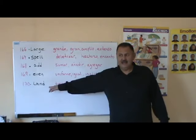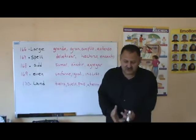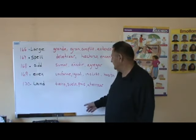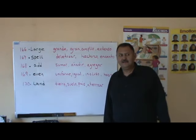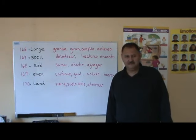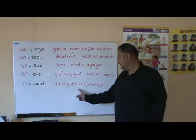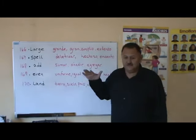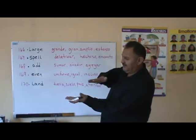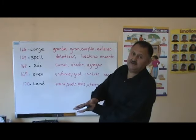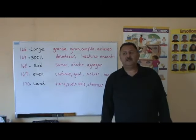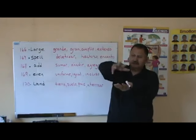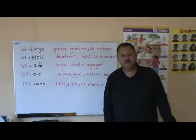Land. Land, as a noun, is the soil, the earth — it's the land. La tierra, el suelo. It also means like the country — the land of something, the land of us, like a country. And then to land, as a verb, is like when an airplane lands on the landing strip — to land, aterrizar. A bird lands on the tree: it flies and lands on the tree. That's another word — land.